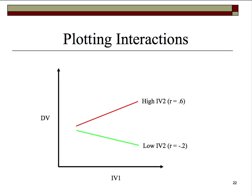You'll notice that the red line and the green line are not parallel. If they were parallel, the low IV2 line might be at a lower level but parallel — that is not an interaction. They don't have to be on the same line, they just have to be not parallel. This is called an ordinal interaction. A disordinal interaction is one where the lines actually cross.